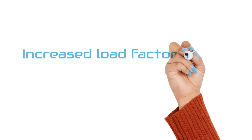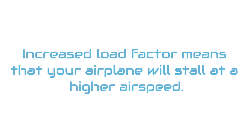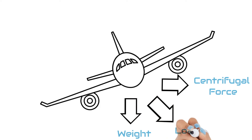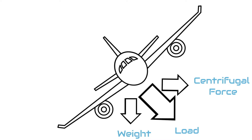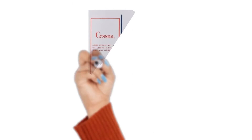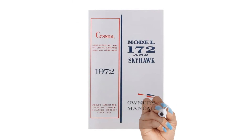An increased load factor means that your airplane will stall at a higher airspeed. Additionally, the greater the bank angle, the more the load factor increases, since the wings have to carry the airplane's weight plus the additional load imposed by centrifugal force. To find the limitations for your airplane, see your POH, or pilot's operating handbook.